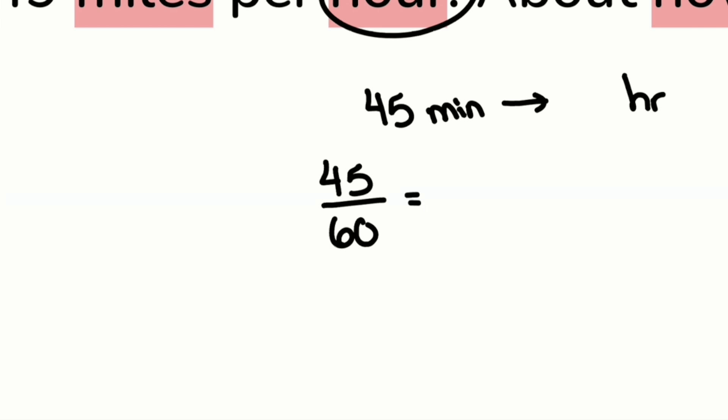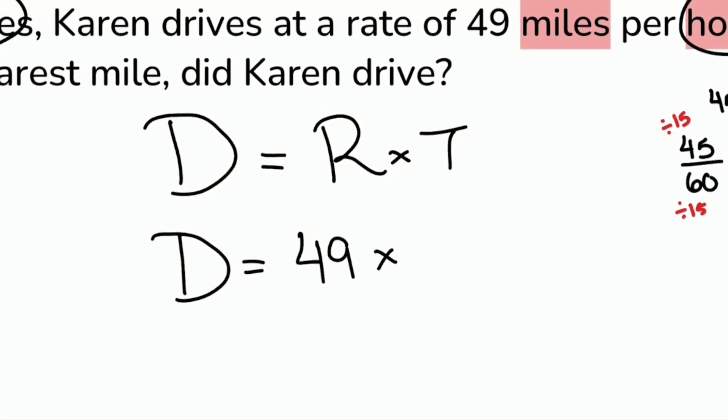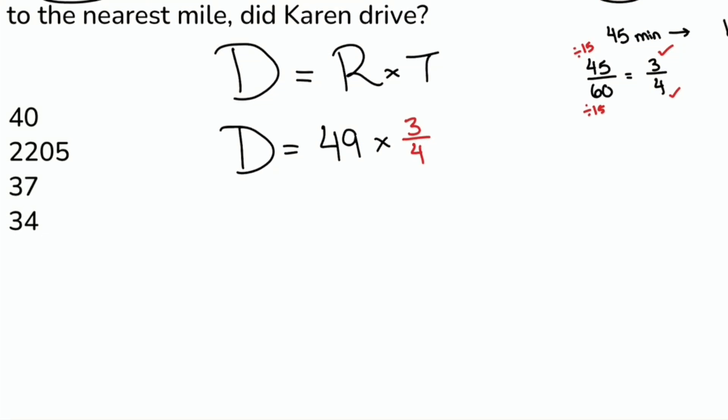And so that'll be 45 divided by 60. And we can actually go ahead and simplify here. We don't have to do long division. You absolutely can. But another way to go for it is to go ahead and just simplify the fraction, making it three quarters. The way that I got that was because you can divide 45 and 60 both by 15. And once you do that, 45 divided by 15, that's 3. 60 divided by 15 is 4. So we'll just bring that right back. So 49 miles per hour multiplied by three quarters of an hour. Now we're consistent. Now we're good.